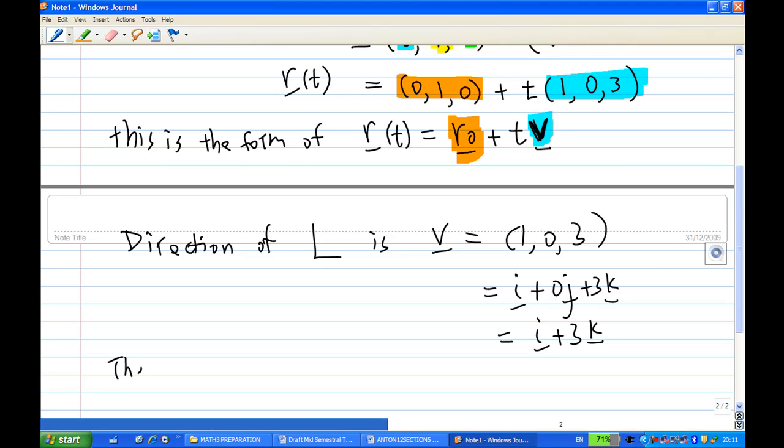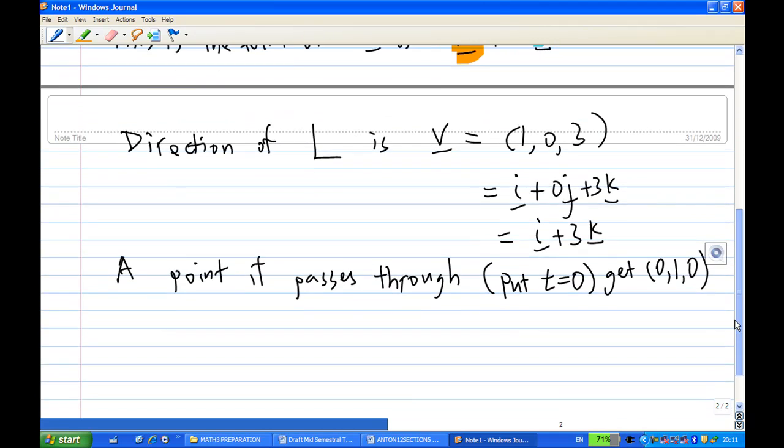By putting different values of t you get different points. So in this case, one of the points it passes through, or a point it passes through is, for example, we'll put t = 0. When we put t = 0 you get (0, 1, 0).